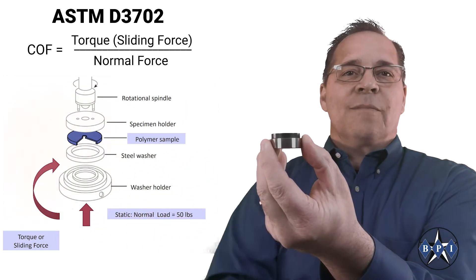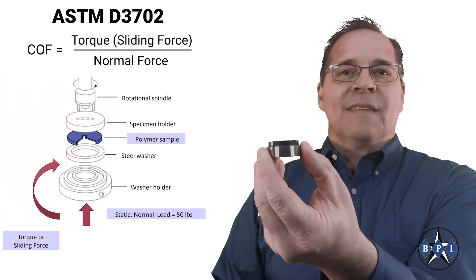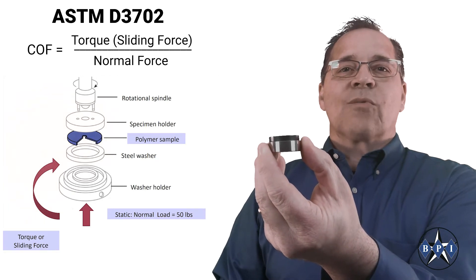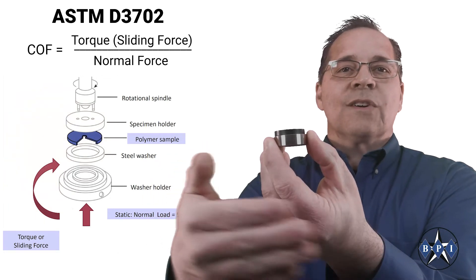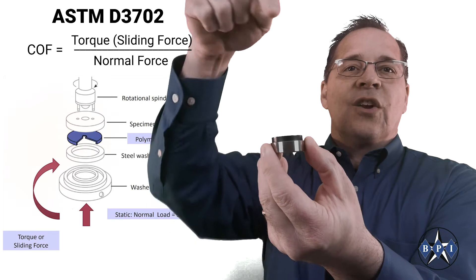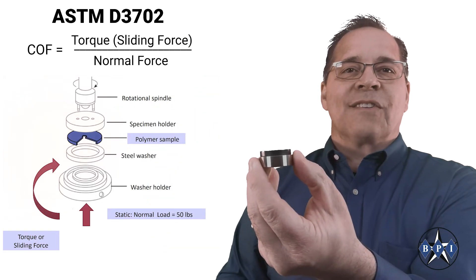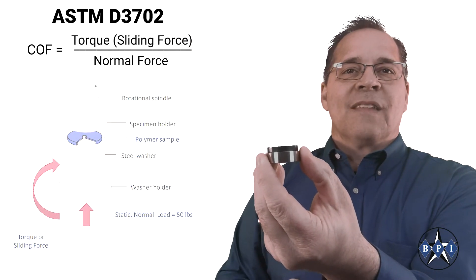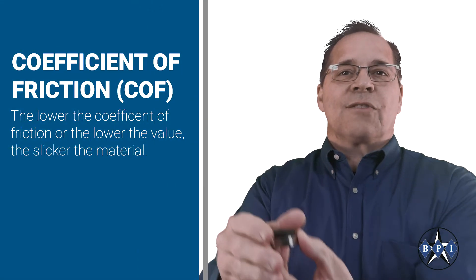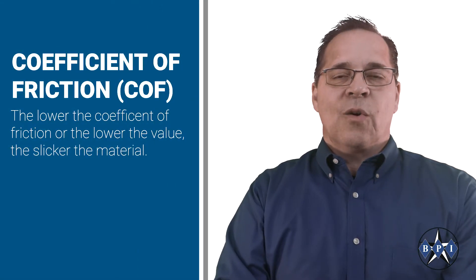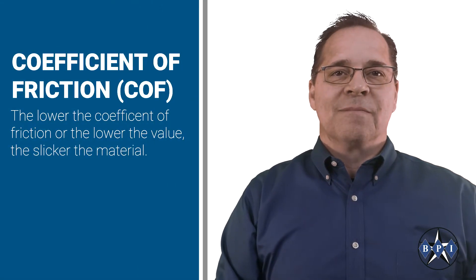There is no unit of measure for the coefficient of friction. It is simply the ratio of the sliding force to the normal force acting on the two mating surfaces. The lower the coefficient of friction ratio, or the lower the value, the slicker the material.